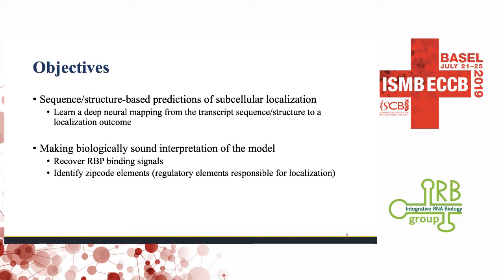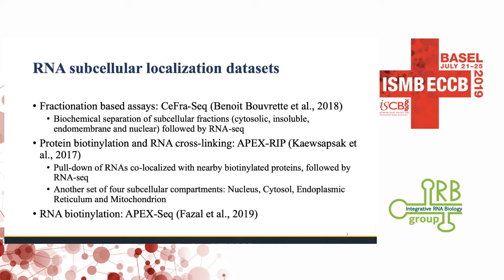Our objective is to predict RNA localization based only on RNA sequences and their secondary structure. This is achieved using a new deep learning approach related to ones previously introduced for predicting RNA-protein interactions, inferring gene functions, and protein localization. We are not only interested in fitting the dataset but also in the inference stage — specifically, recovering RBP binding signals from the sequence and identifying cis-acting elements.